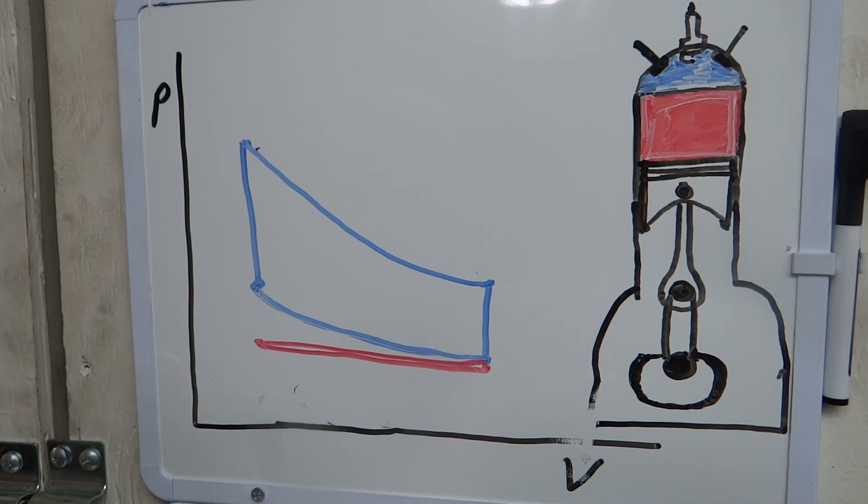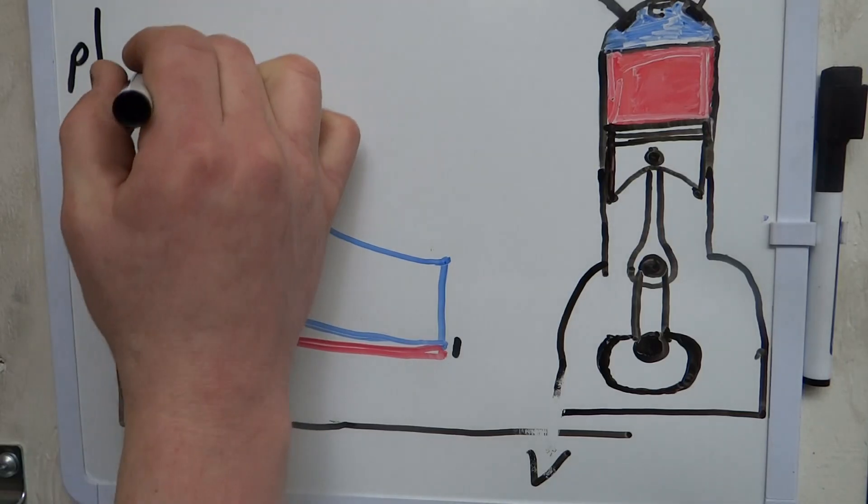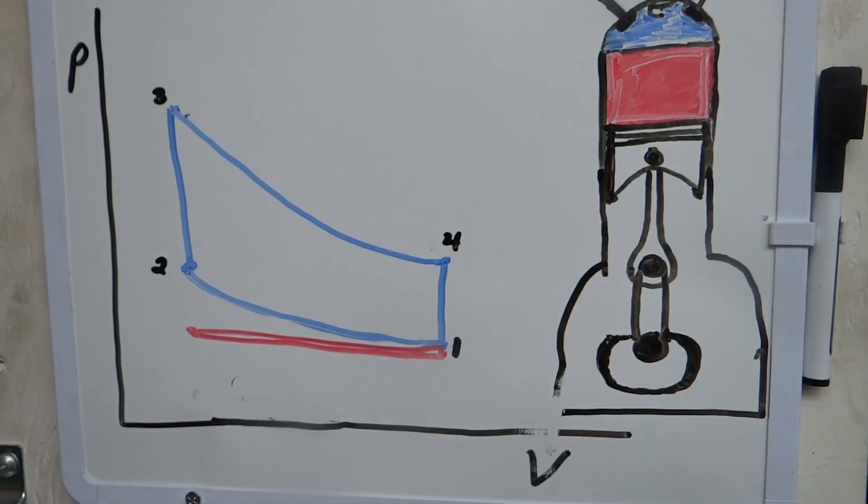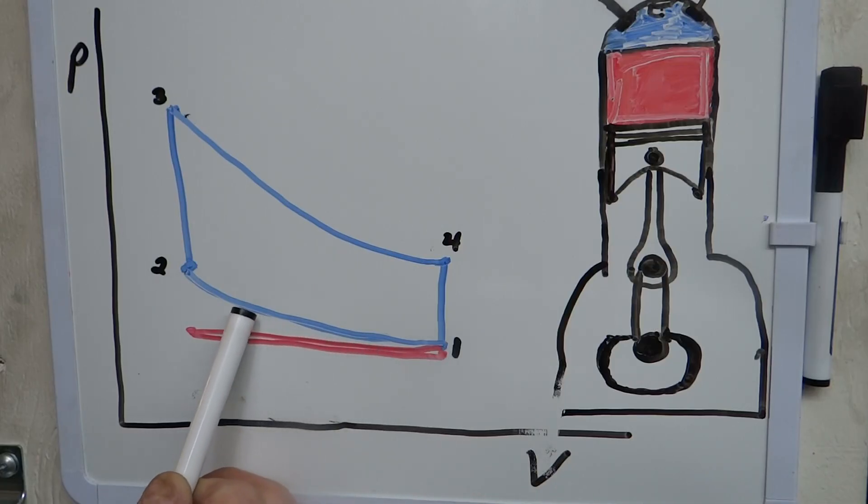We've got a few events that happen in a four cycle engine or a four stroke engine. Starting out at one, two, three, four. So consider that to be bottom dead center on the compression stroke. So the piston's moving up in the bore, the pressure is going up due to the compression, and now we're basically at top dead center on the compression stroke. So we went from bottom dead to top dead, compressing the gas along the way and the pressure went up.